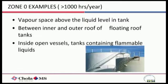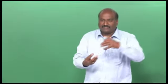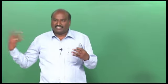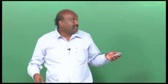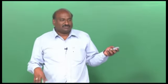Zone classification can be replicated in your laboratory. For example, if you do a manual dispensing operation 10 times a day for 5 minutes each — that is 50 minutes per day, and in a year it accumulates. To classify an area as zone 0, it should be greater than 1000 hours. If it comes to only 500 or 100 hours in a year, it would be classified as zone 1.